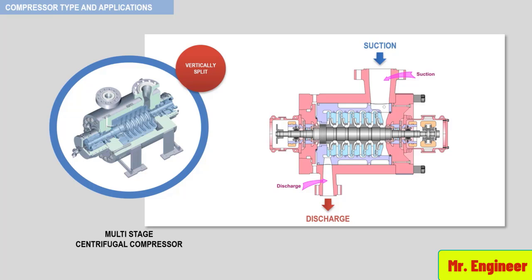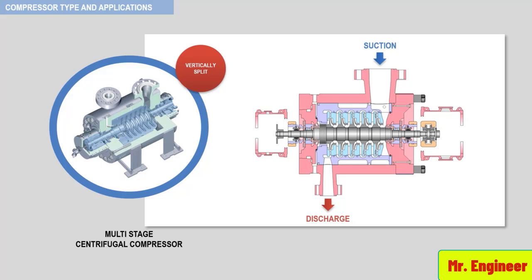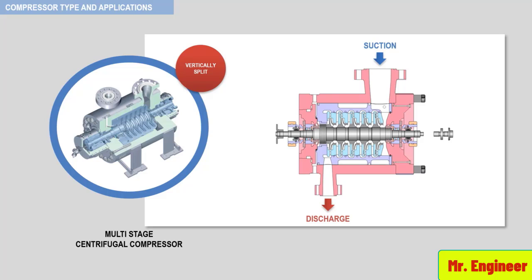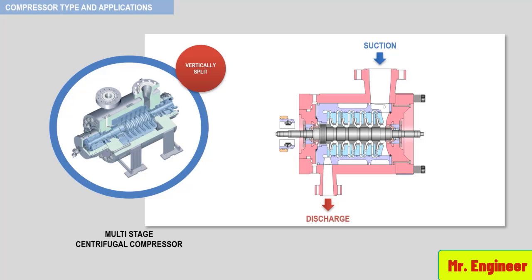Let's disassemble the various components to understand the respective arrangement in this typical barrel centrifugal compressor. We begin by removing the bearing housing cover. Then, the bearing housing is removed. Next, we split the thrust bearing assembly. Then, we remove the thrust collar assembly. Next, we remove the coupling. Then, we split the radial bearing on the non-driver end, then the radial bearing on the driver end. Then, we remove the sealing arrangement on the non-driver end, then the sealing arrangement on the driver end.